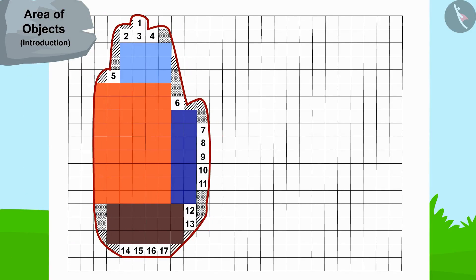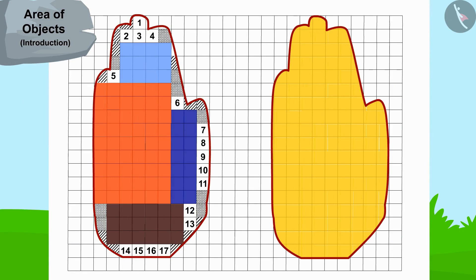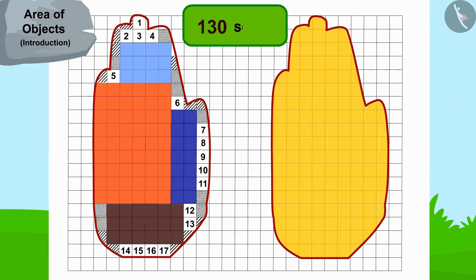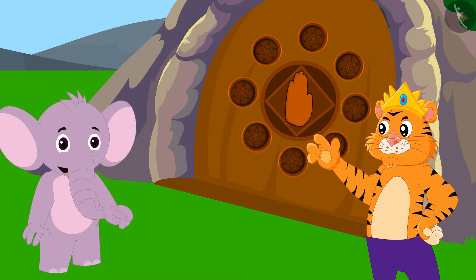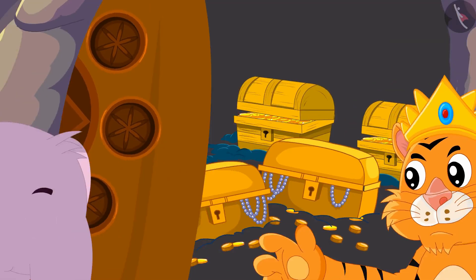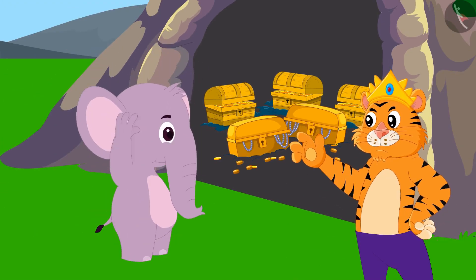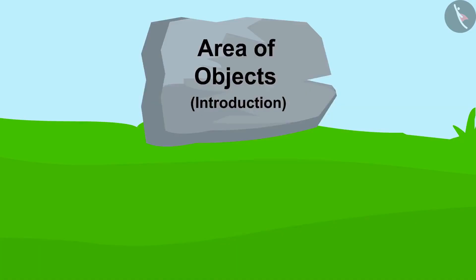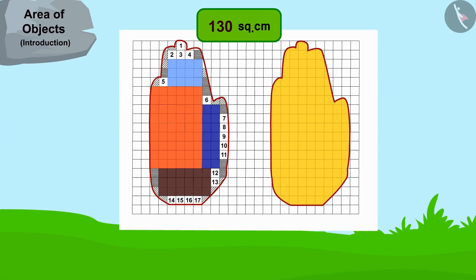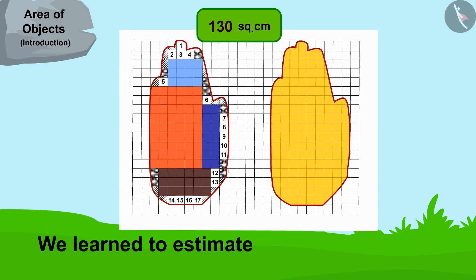Appu's hand impression matched the impression on the cave door. The king opened the door with Appu's help and gave him half of the treasure in return. Children, in this video we learned to estimate the area of objects. In the next video we will learn more about it through some interesting examples.